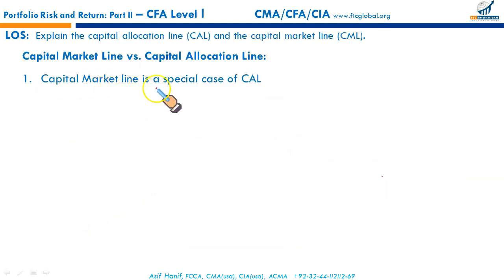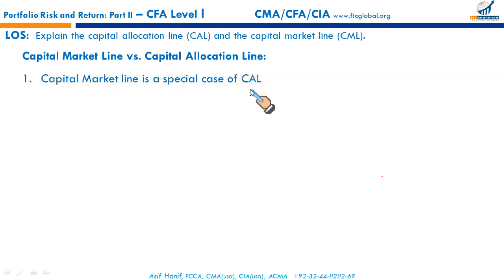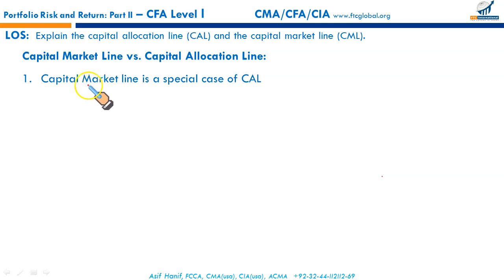The difference between the capital allocation line and the capital market line is that in the capital allocation line, it is made up of allocation between the risk-free asset and a risky portfolio for an investor. Whereas in the capital market line, the risky portfolio is the market portfolio. The investor defines the market to be its domestic stock index — a collection of all the stocks in that particular market — and the expected return of the market is expressed as the expected return of that index.